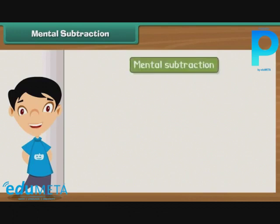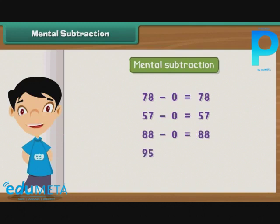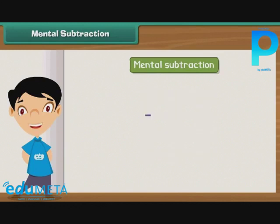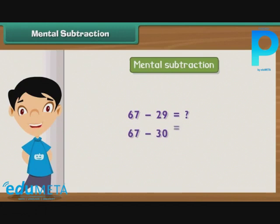We can perform mental subtraction in a manner similar to mental addition. Zero is the easiest number to subtract, so we will always try to make the second number — the number to be subtracted — end with 0. Let us try to subtract 29 from 67. Since the second number must end with a 0, we subtract 30, not 29, from 67. The subtraction gives us 37. But we subtracted an additional 1, so we add 1 to the difference. Thus, the result of subtracting 29 from 67 is 38.